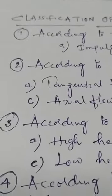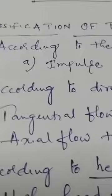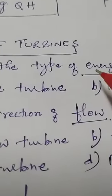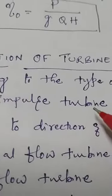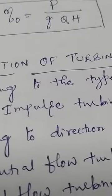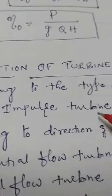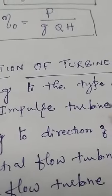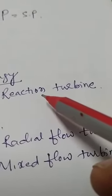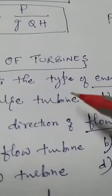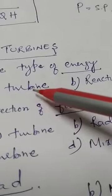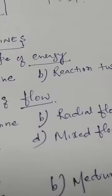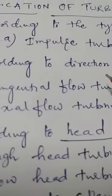The overall efficiency can be written as P / (gQH). Now come to the classification of turbines. There are four classifications. The first classification is according to type of energy: impulse turbine and reaction turbine. In an impulse turbine, only kinetic energy is produced. In a reaction turbine, both kinetic energy and pressure energy are present — that is the only difference between the two.